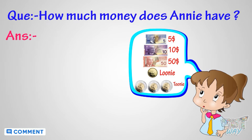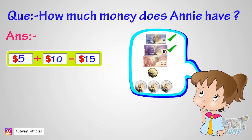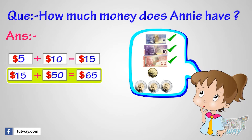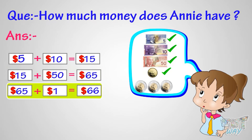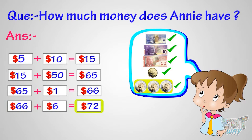Now, let's add them all to get how much money she has. Five plus ten, we get fifteen. Fifteen plus fifty, we get sixty-five. Sixty-five plus one, we get sixty-six. Sixty-six plus six — that is three toonies — we get seventy-two. So Annie has seventy-two dollars in all.